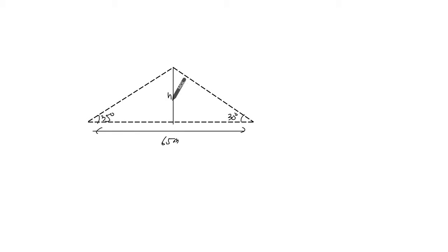How tall is this tree? The tree is right here. So this is a bit tricky because we're not actually given information about this length. Let's actually call this x, which makes this one right here 65 minus x.